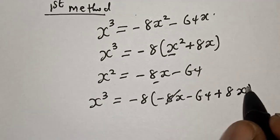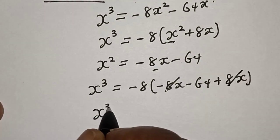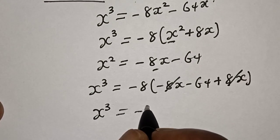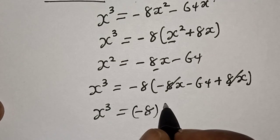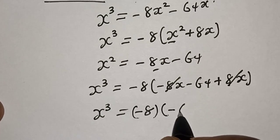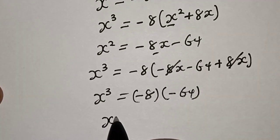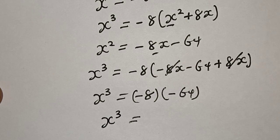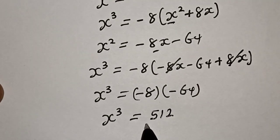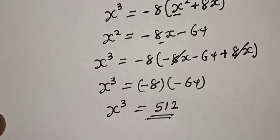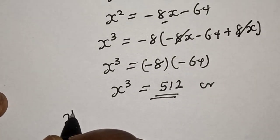This will be equal to: s³ = −8(−8x − 64), which gives s³ = 512. That is our answer for the first method.